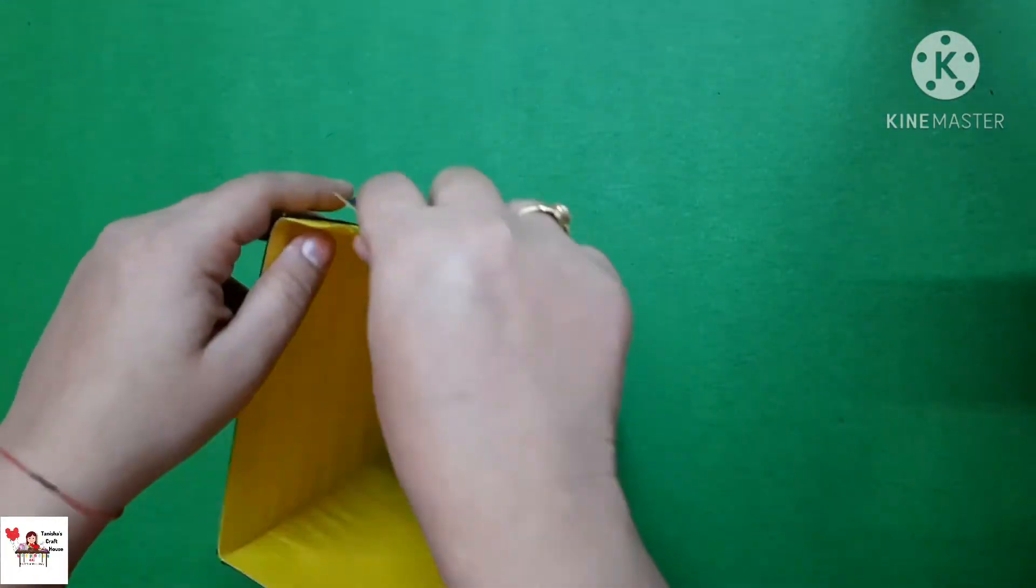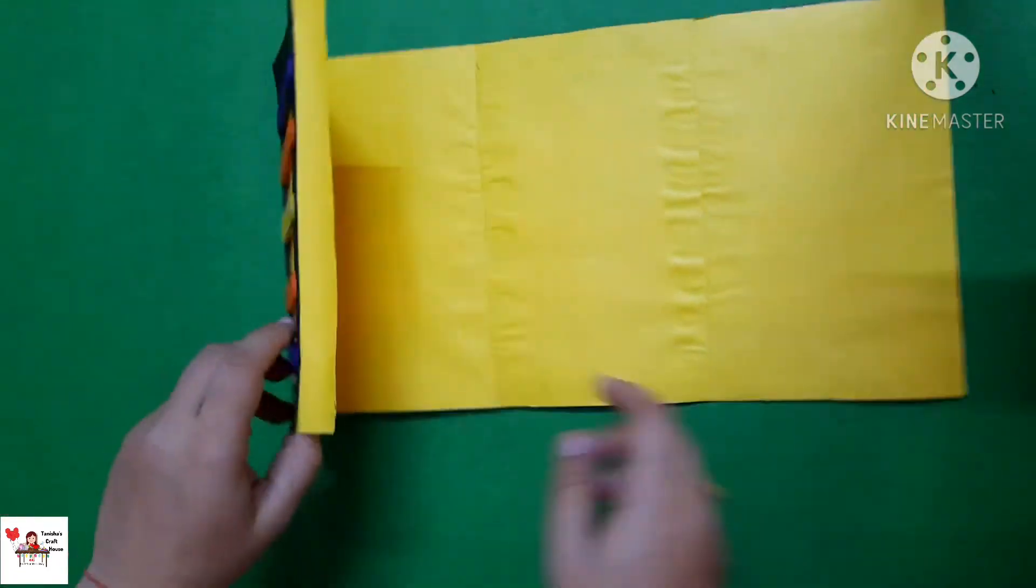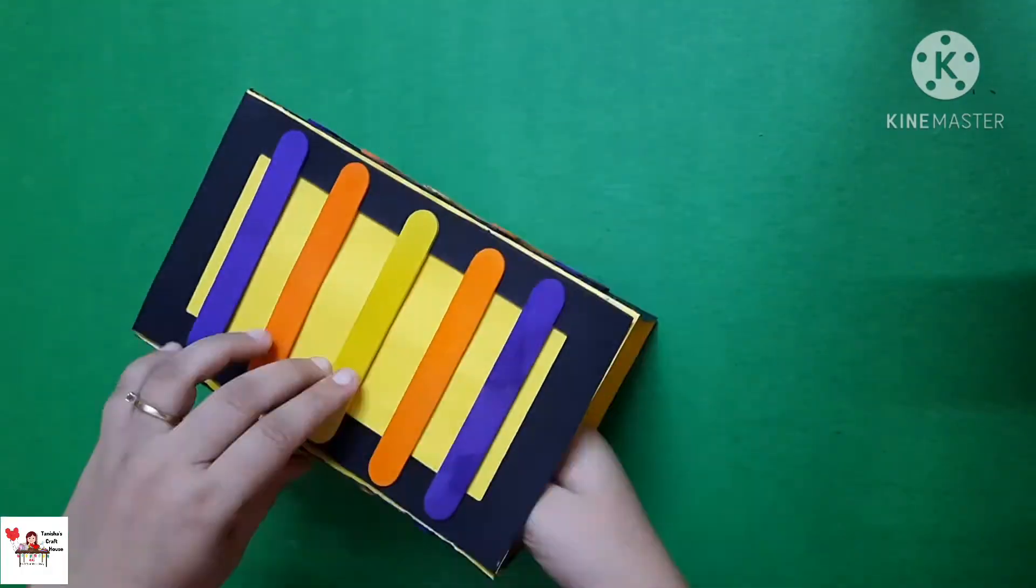After we stick it, we are going to glue the additional 2 cm and just stick it like this so that it forms a cube kind of a thing.